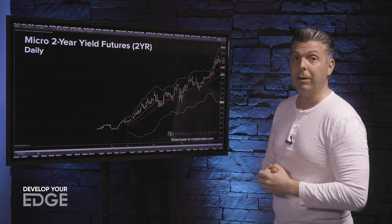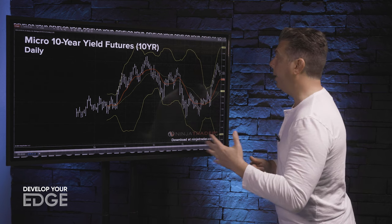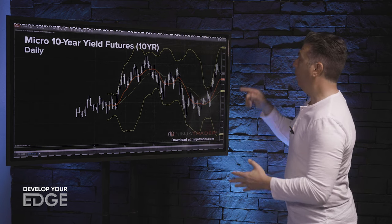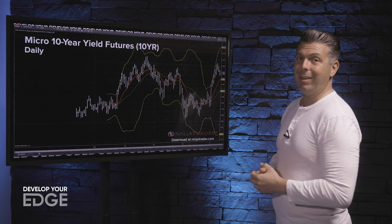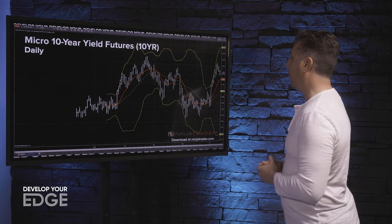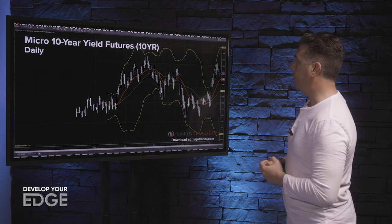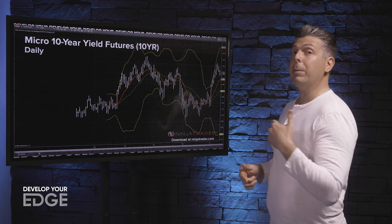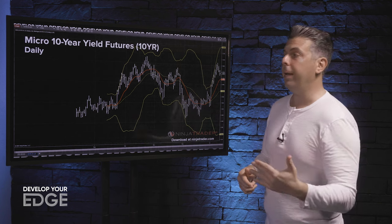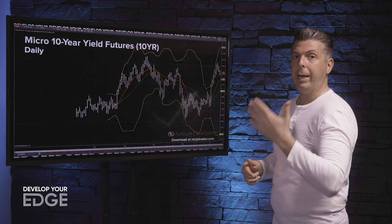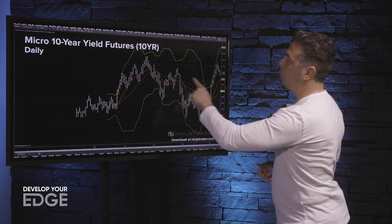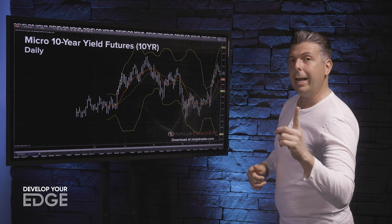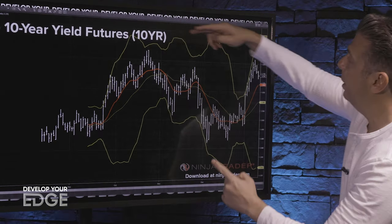Let's go to the 10-year now. Here we are at the micro 10-year yield futures, symbol 10Y, currently trading 1.73. This chart looks very different than the 2-year. We've talked about how the short end has really exploded in making highs. The 10-year is really still very much range-bound.